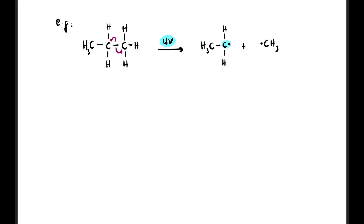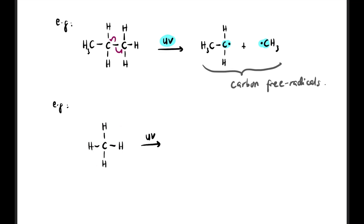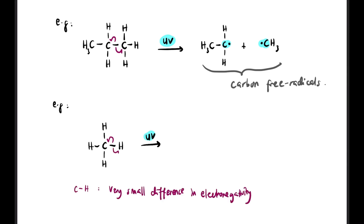These two are called carbon free radicals because they involve carbon. Another example: CH4 can also break at the C–H bond under UV. This can happen because there is a very small difference in electronegativity, so it is considered a non-polar bond, giving two dots like that.